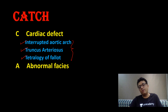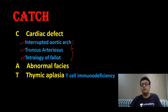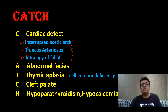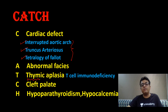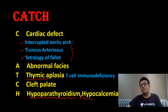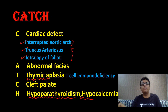A is for abnormal facies. T is for thymic aplasia, which leads to T-cell immunodeficiency. C is for cleft palate. H is for hypoparathyroidism, causing hypocalcemia. A question may come with one choice saying thyroid hypoplasia — but thyroid is not hypoplastic. In DiGeorge syndrome, the thymic gland and parathyroid gland are involved. Hypoparathyroidism leads to hypocalcemia. Compare: Williams syndrome has hypercalcemia, while DiGeorge syndrome has hypocalcemia.